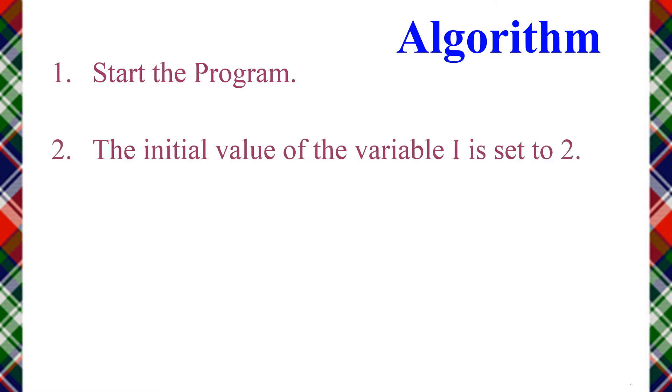Let's see the algorithm. Step 1: Start the program. So we start the program to print even numbers. Step 2: The initial value of the variable I is set to 2. So next, we set the initial value to a variable, which is I.